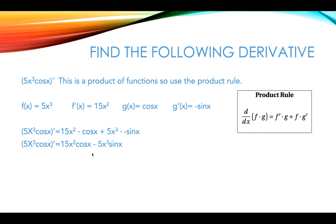We're now going to plug this into the product rule formula. It's going to be f prime times g, so 15x squared times cosine x, plus f times g prime, so 5x cubed times negative sine x. So we get 15x squared times cosine x minus 5x cubed times sine x.